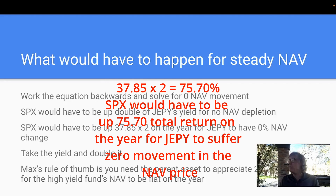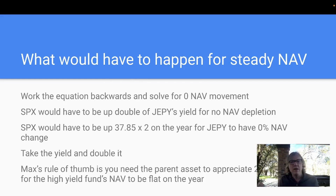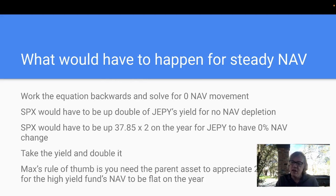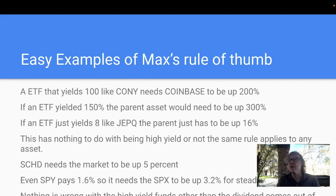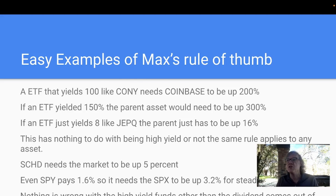So you just take the yield and double it — that's my rule of thumb. If you have a yield fund that pays 100%, you need the parent to be up 200% on the year. Some of them do pay that much, like CONY, and those are the ones that tend to go up the most also — that's the reason those options are priced so rich. It just makes you think: if you need twice the dividend, that's a good case for lower dividend funds. If it only pays 20%, you only need 40% from the parent — that's not too much to ask for. But asking for 150–200% is crazy. That's essentially what you're doing.